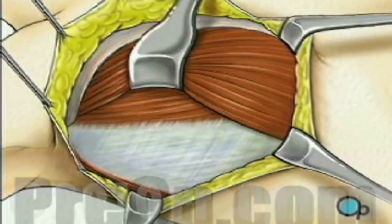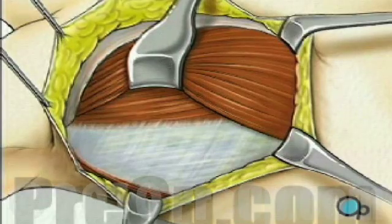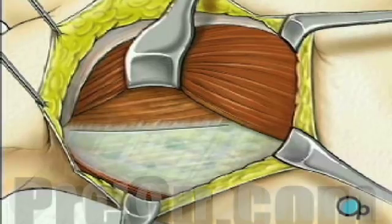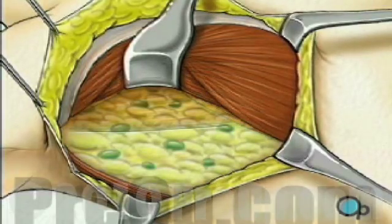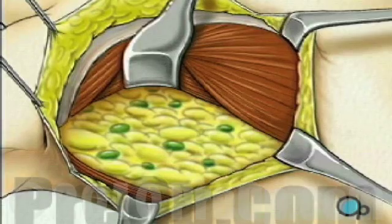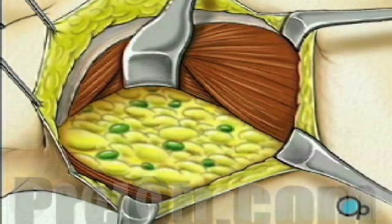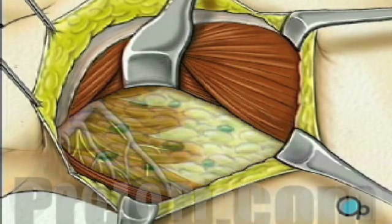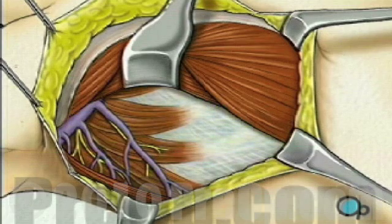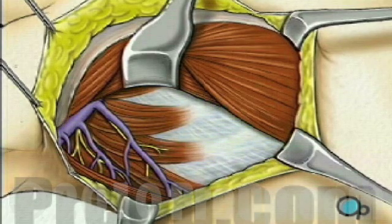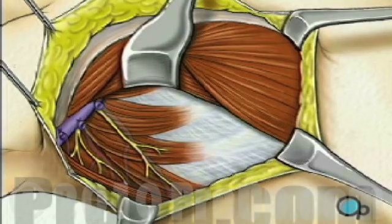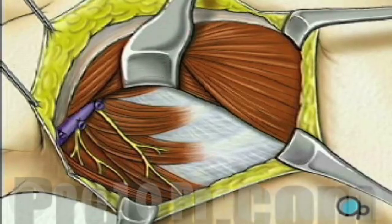The surgeon will move this muscle aside, creating a clear view of the surrounding fatty tissue. Within this fat deposit lie lymph nodes, lymph vessels, blood vessels, and nerves. Using great care not to damage the large thoracic nerve, your doctor will remove the lymph nodes and surrounding fat. Blood vessels will be tied off and your doctor will thoroughly examine the surrounding tissues for any other signs of disease.